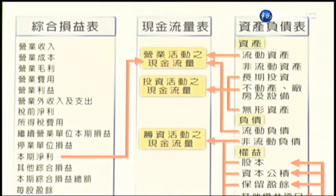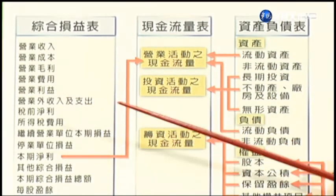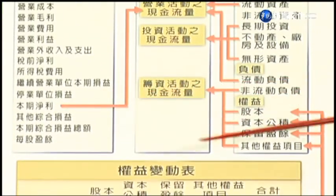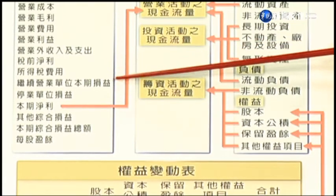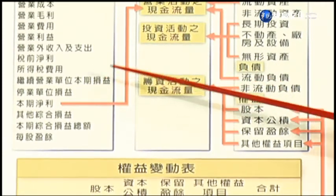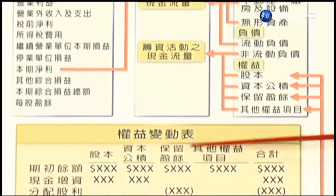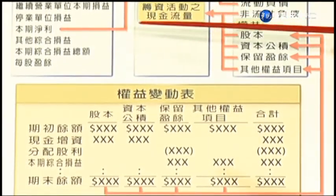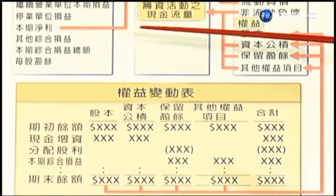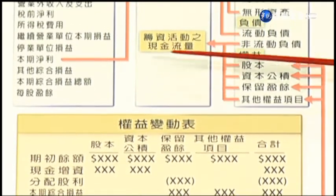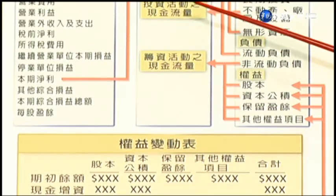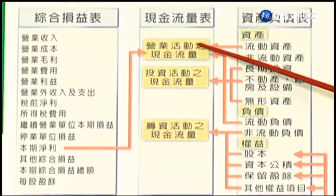那么这几张主要的报表它们之间有什么样的关系呢？我们用一个图表来为同学做说明。首先，我们会编综合损益表——基本上就是把企业在整个营业交易所产生的收益跟费损汇集在综合损益表，得出本期损益的数字。我们的单位有可能是停止营业，也有可能继续营业，所以分成两个部分；另外下面的部分就是其他综合损益。损益数字最后它是归于权益变动表，所以会影响到我们的盈余的数字；其他综合损益也会放在权益变动表的其他损益的项目里面。